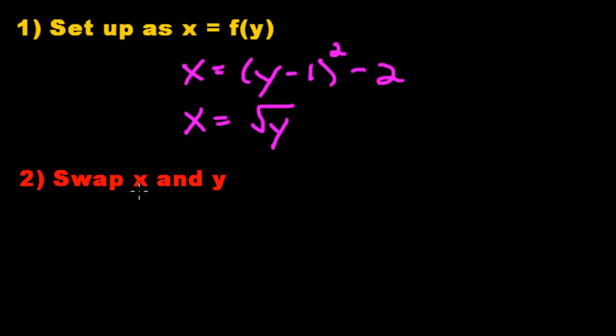Step 2, we're going to swap the variables x and y. So now instead of x equals y minus 1 squared, it's going to be y equals x minus 1 squared minus 2. And the other function is y equals the square root of x. Now what happened was we turned these into functions of x. We know how to graph functions of x. So let's go ahead and do that now.